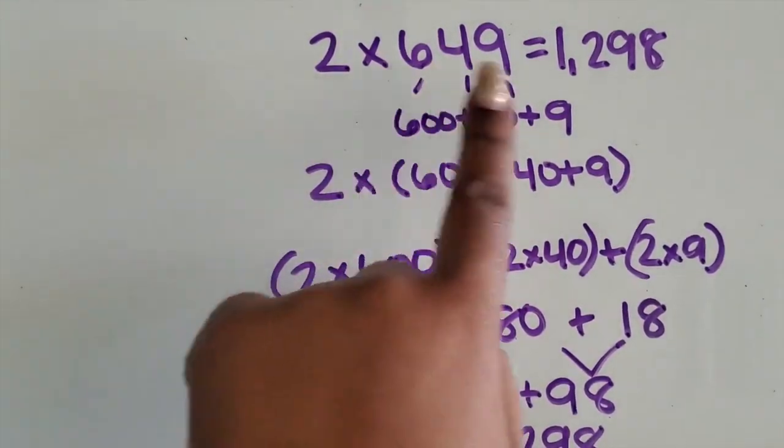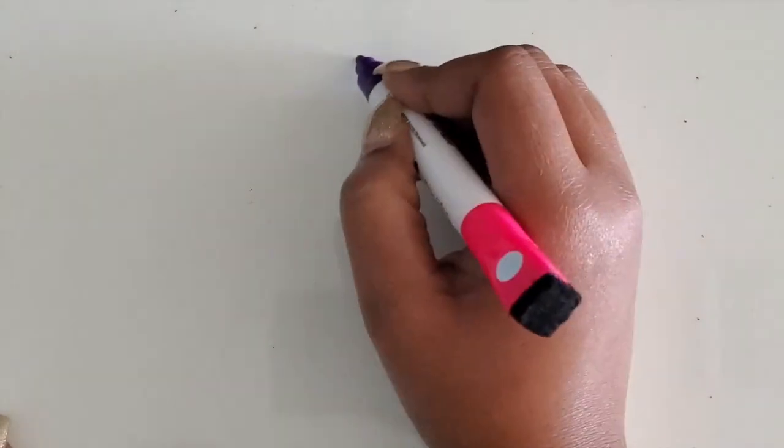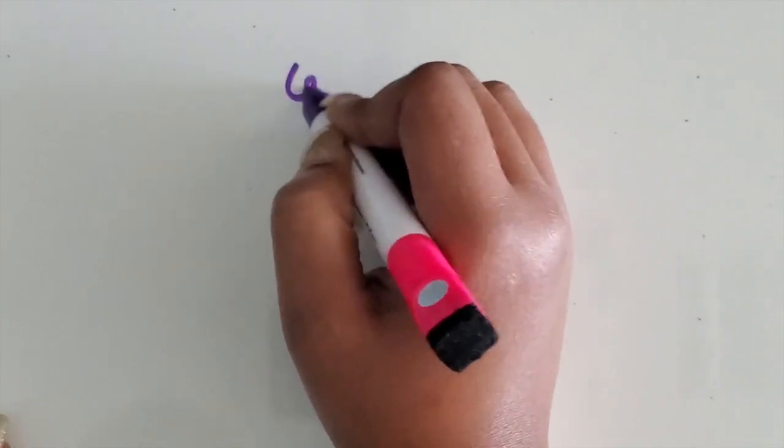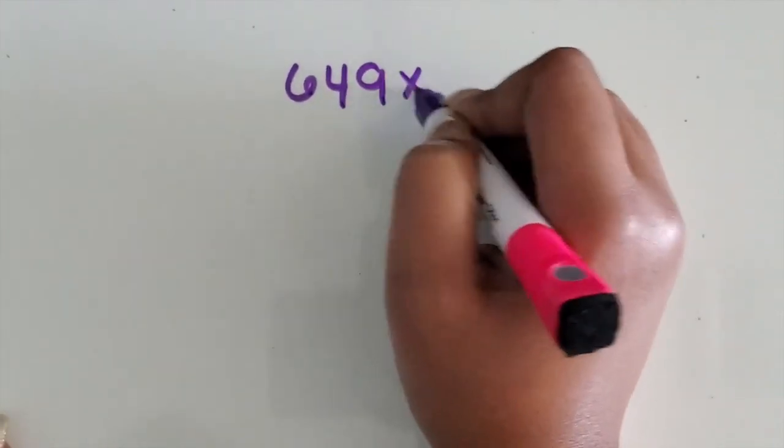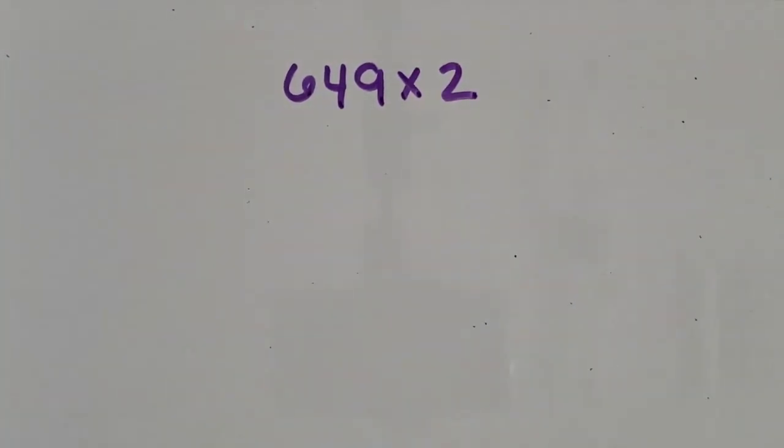Let's see what it looks like when we switch the location of the factors. We're going to put the three-digit number first, and the one-digit number second. We want students to see that even though the factors are switched, you'll arrive at the same product.